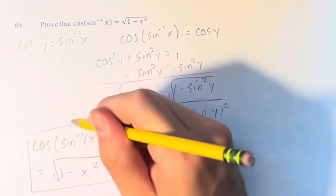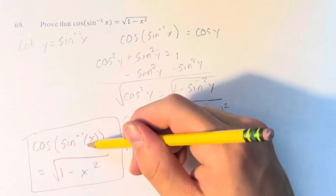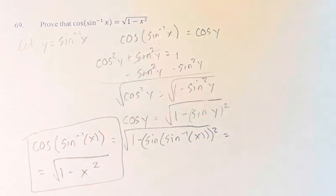So therefore, the cosine of sine inverse of x is equal to the square root of 1 minus x squared.